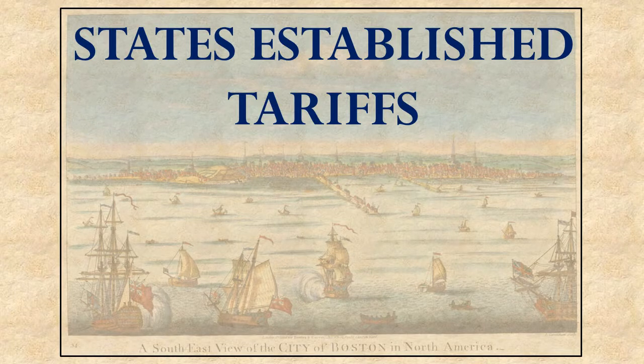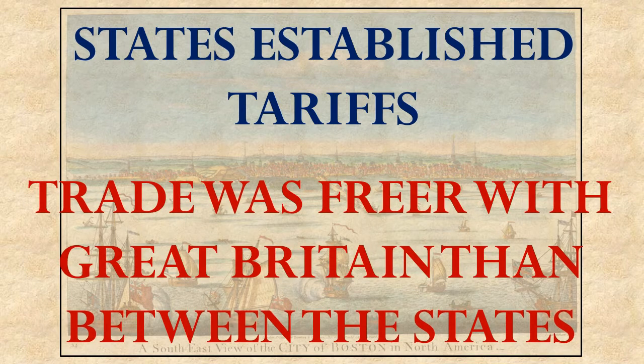A third problem can be seen as the states established tariffs—taxes on goods being imported into a state. At its harbors and borders, as goods were brought in to be sold, they would stop the people trying to transport them and require a tax payment. This is something countries typically do. But this was particularly difficult for the Confederation because the states made it freer for people to do business from within their state with Great Britain than with other states.